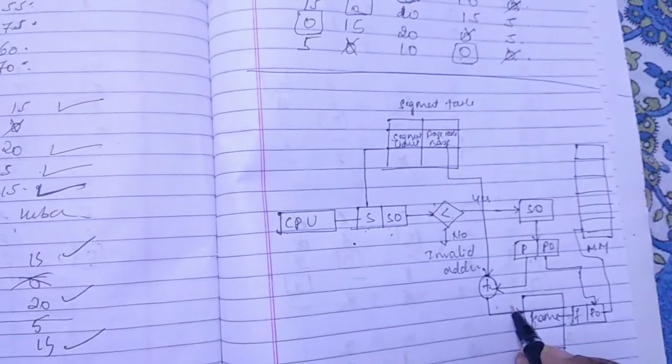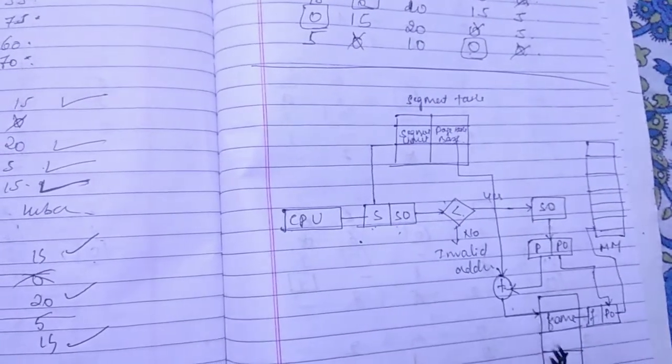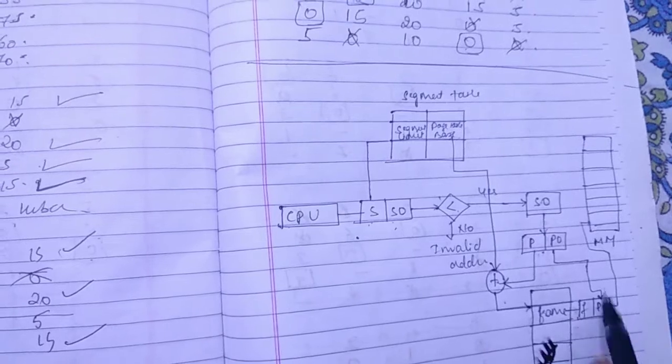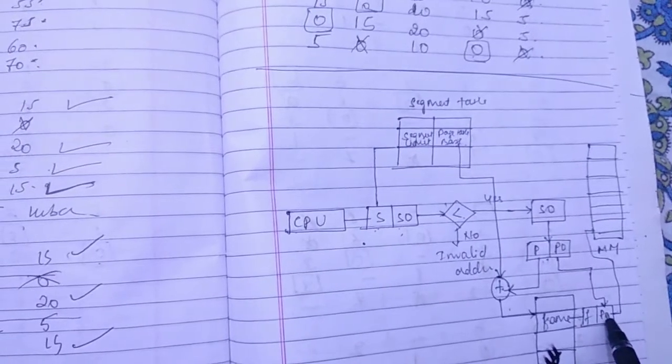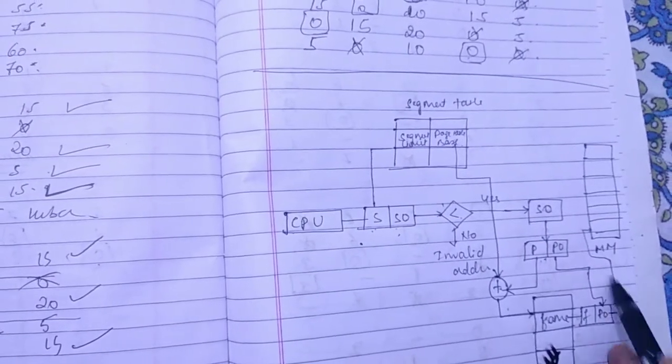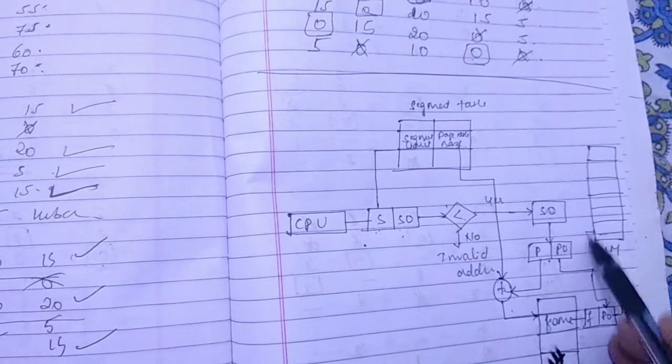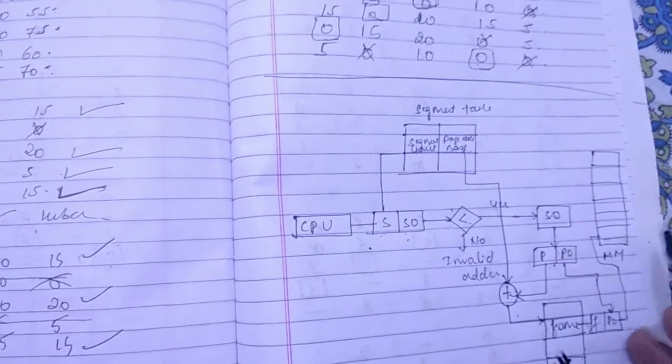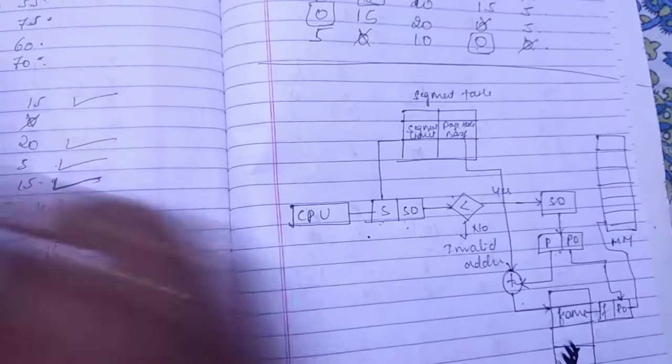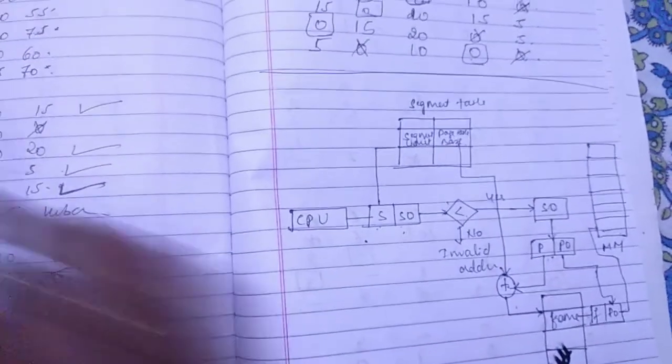So the actual frame number with the page offset is mapped to the main memory to get the desired word in the page of a certain segment of the process. So this is how segmentation with paging will work.